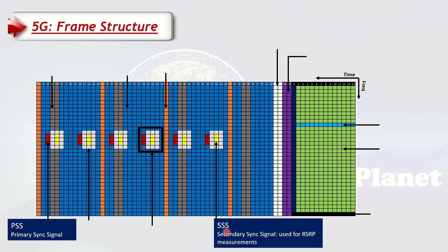The next thing the UE needs to find is the Secondary Sync Signal (SSS). In this diagram, all the yellow blocks indicate the SSS. It is also used for RSRP, which measures coverage — if the UE needs to find out if the 5G coverage is good or bad, it measures this channel's power. SSS also gives you the remaining part of the PCI, so when you have both PSS and SSS decoded, you can find out your full PCI.